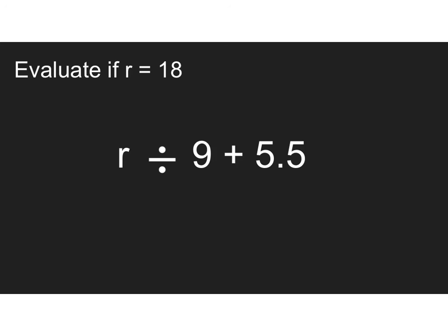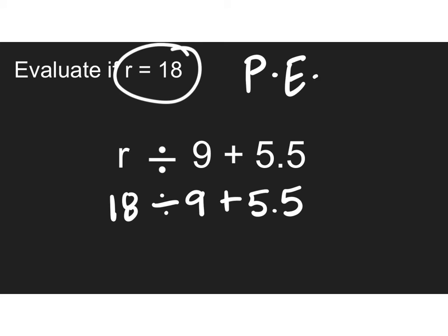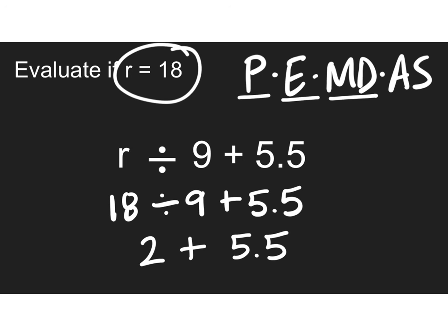And this is our last example. Remember, you can always come back to this video if you still have questions. I'm going to substitute. 18 for r divided by 9 plus 5 and 5 tenths. Go ahead and write this down on top of your paper if you need to. Parentheses, exponents, multiplication, and division. I'm not going to add these first because then I would get a different answer. 18 divided by 9 is 2 plus 5 and a half gives us 7 and a half or 7 and 5 tenths.